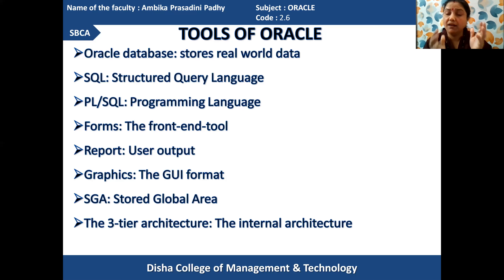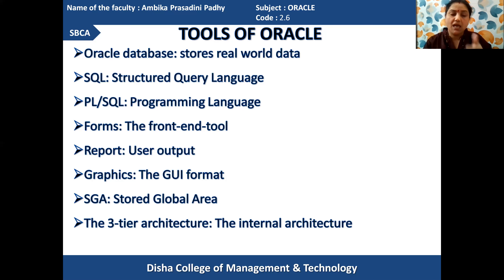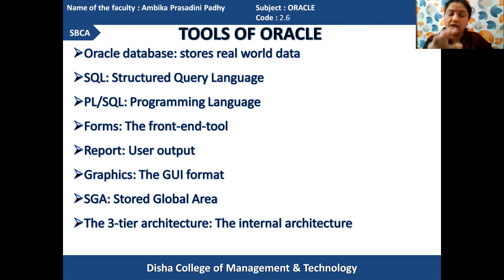It is the internal architecture of the database — how the database looks, how it performs its executions internally, how it takes data from the user, how it processes it, where it executes the SQL and PL/SQL programs, in which place the data will be permanently stored, and in which place the user's output will be received. The three-tier architecture contains a clear picture of it. Let's watch how the three-tier architecture looks.